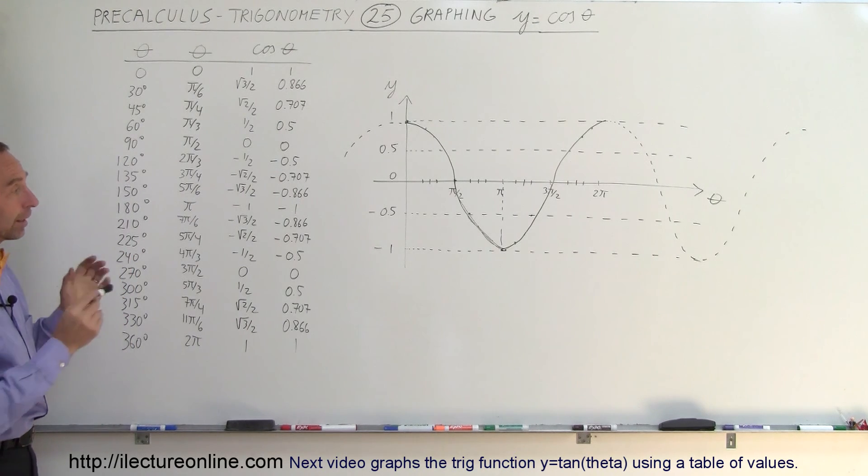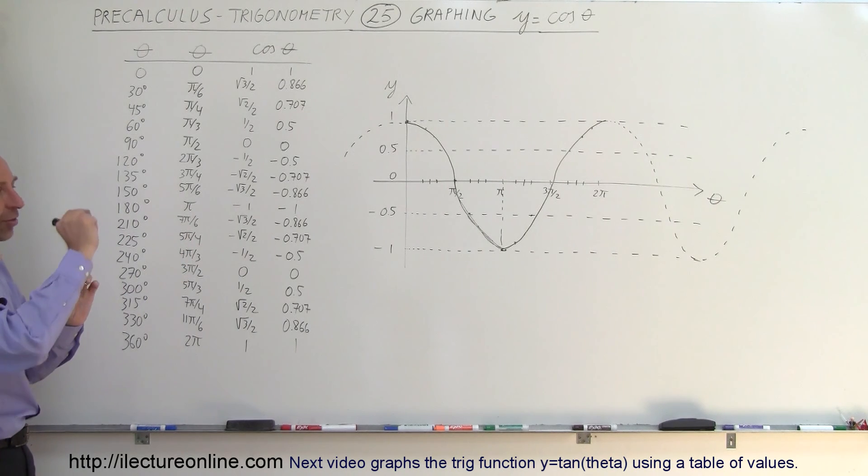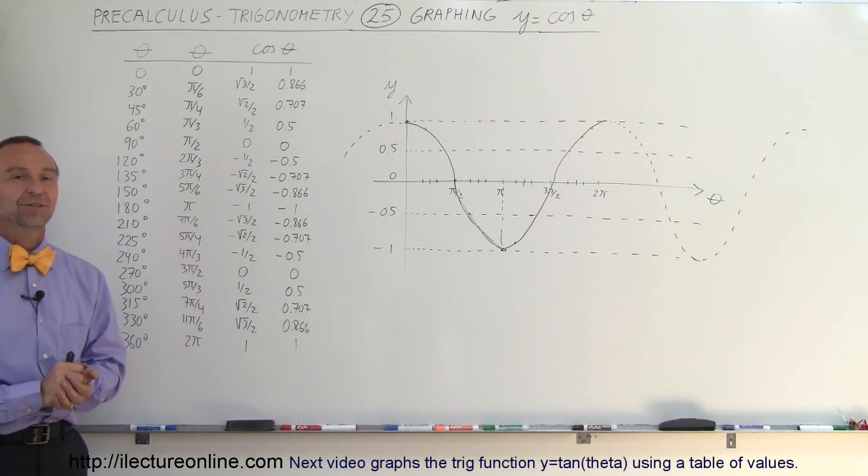and try that at home. Get some graph paper or quadrille paper and lay it out. You have to take your time because it's kind of hard to get the values on both the y-axis and the theta-axis to line up the way they should. But anyway, that's an example of how we graph the cosine of the angle.